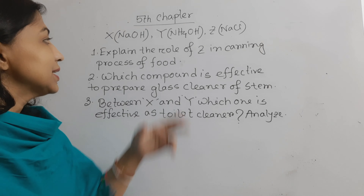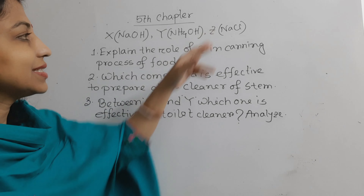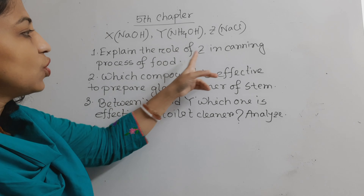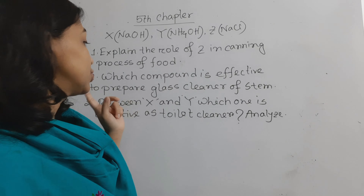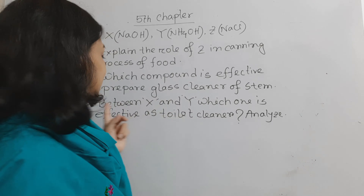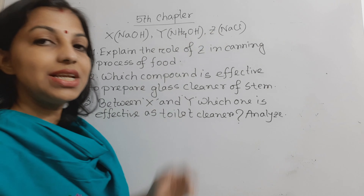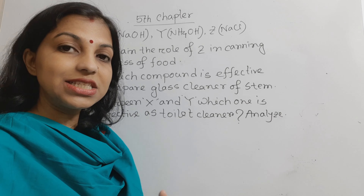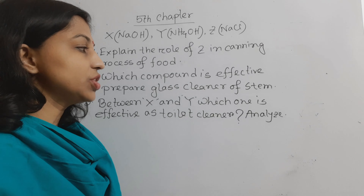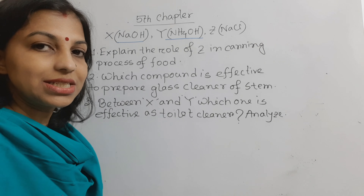I have written a creative question on the board from Chapter 5. X is sodium hydroxide, Y is ammonium hydroxide, and Z is sodium chloride. First question: explain the role of Z in the canning process of food. Second: which compound is effective to prepare glass cleaner for steel? Third: between X and Y, which one is effective as toilet cleaner?